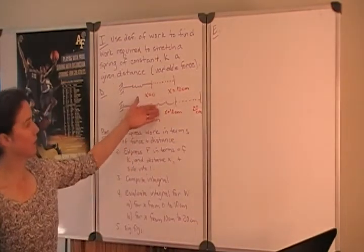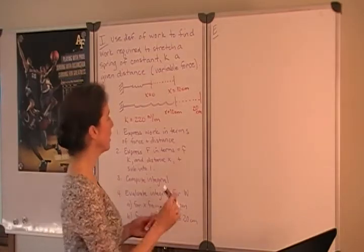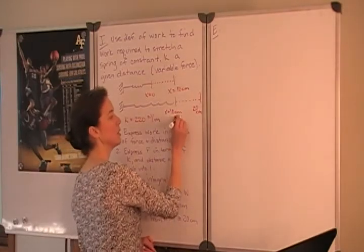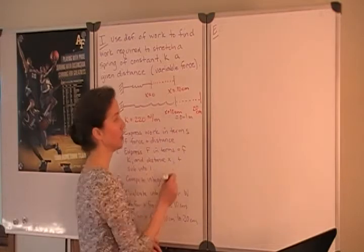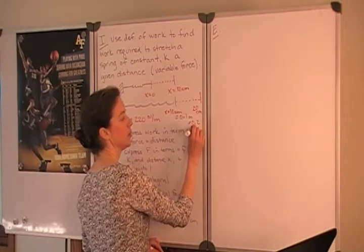So the quantities that we've been given are in centimeters which are not MKS units. So let's make a note that 10 centimeters is 0.1 meters, 20 centimeters is 0.2 meters. Those are the values we will actually use when it comes time to substitute.